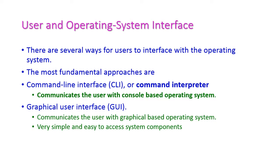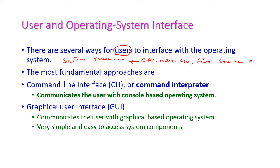Normally, interfaces are used to access the system resources. There are several ways for users to interface with the operating system to access system resources such as system-related functions. If any user wants to access the system resources, they need an interface. There are two fundamental approaches: first, the command line interface (CLI), otherwise called the command interpreter; and second, the graphical user interface (GUI).